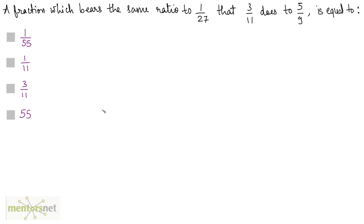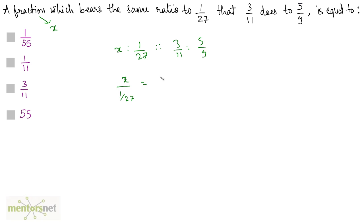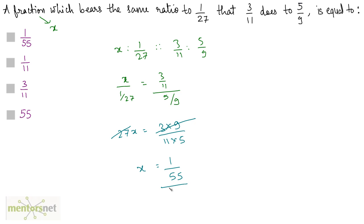A fraction which bears the same ratio to 1 by 27 that 3 by 11 does to 5 by 9 is equal to? Let this fraction be x. So x is to 1 by 27 is proportionate to 3 by 11 is to 5 by 9. Writing this as x divided by 1 by 27 equals 3 by 11 divided by 5 by 9, we get 27x equals 3 times 9 divided by 11 times 5, which is 27 by 55. So x equals 1 by 55. That's our answer, option A.